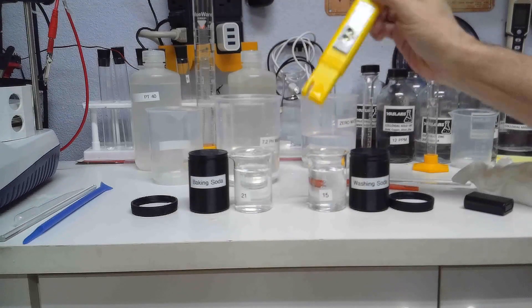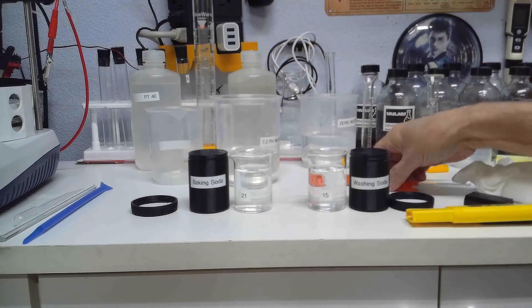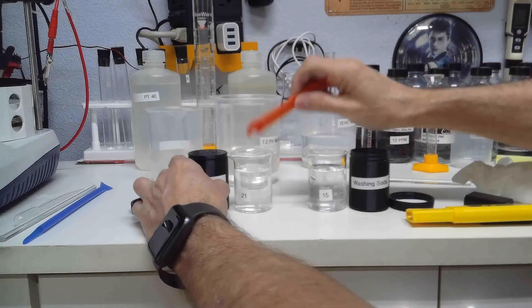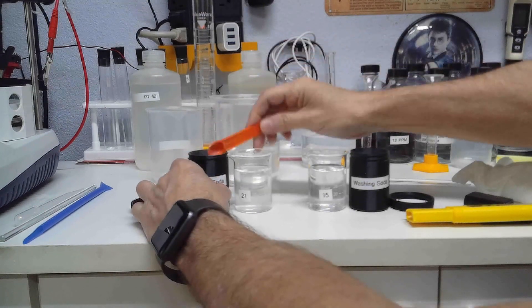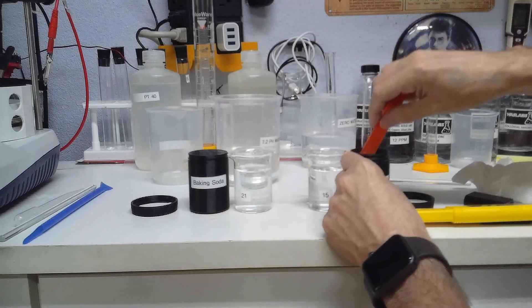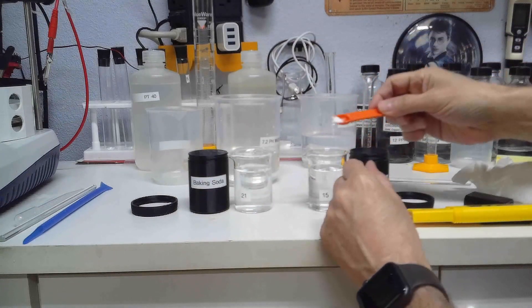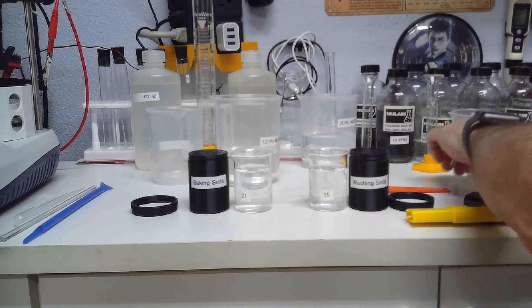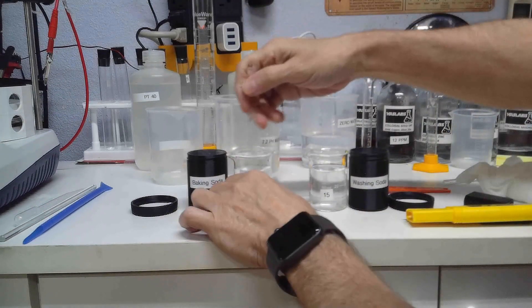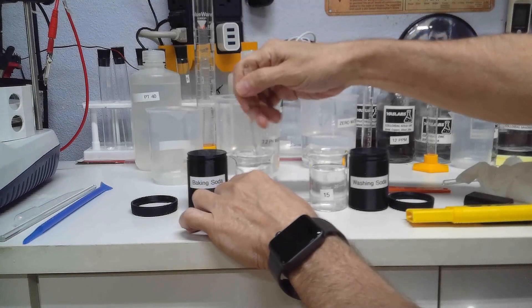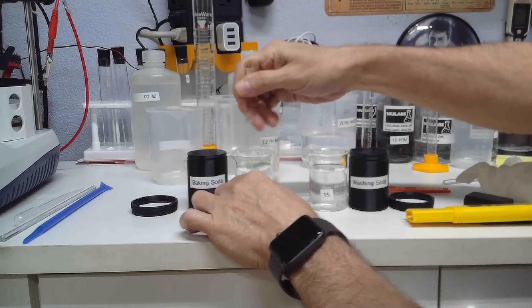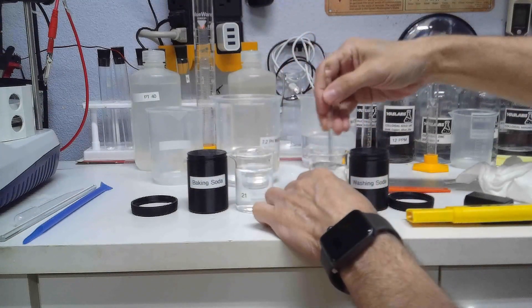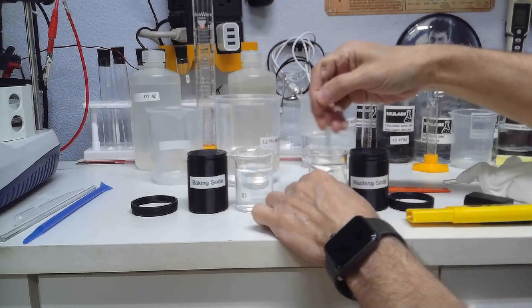They're both the same and now we're going to mix a little bit of baking soda in here, just a small amount, and then we're going to mix a little bit of washing soda in here about the same amount. We're going to mix these. I'm going to mix the baking soda up, flip this around so we don't contaminate the other sample, and I'm going to mix this one around.